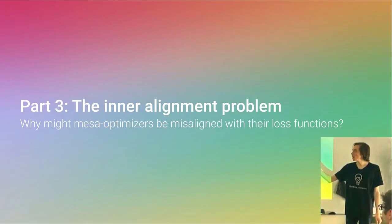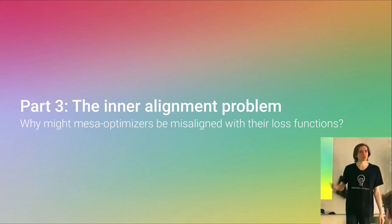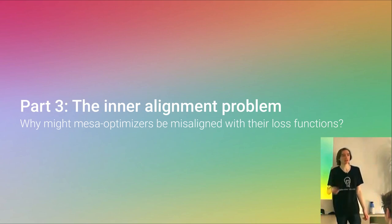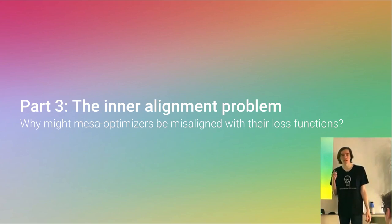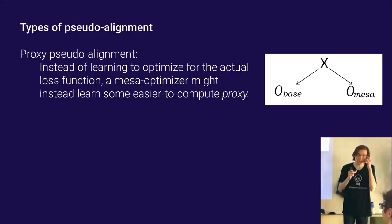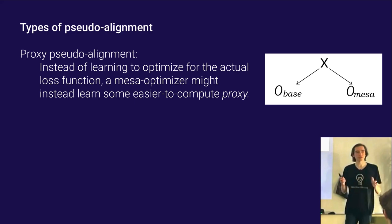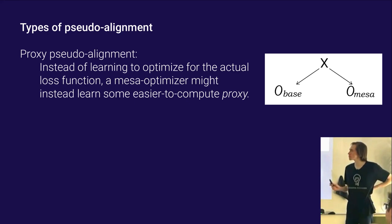That's part one — things that push you towards or against learning optimization. My take is it's going to happen. All of the ways in which we want to build powerful models that can generalize in new situations push towards models that are capable of doing optimization. So if that's going to happen, will it be doing the right thing?